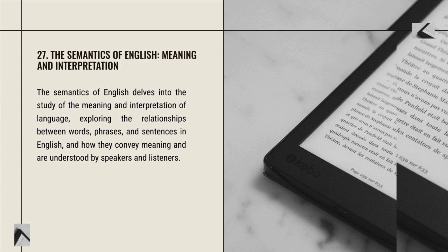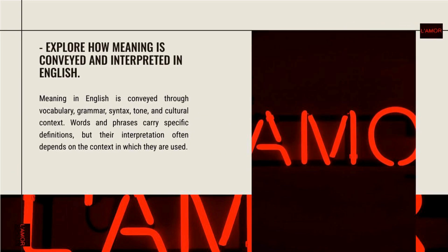The semantics of English delves into the meaning and interpretation of language, exploring the relationships between words, phrases, and sentences and how they convey meaning. Meaning in English is conveyed through vocabulary, grammar, syntax, tone, and cultural context. Words and phrases carry specific definitions, but their interpretation often depends on the context in which they are used.